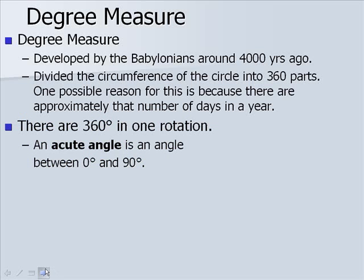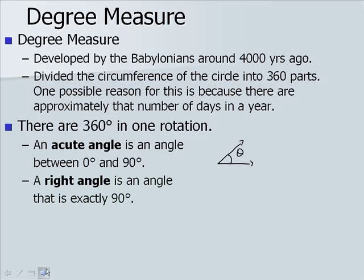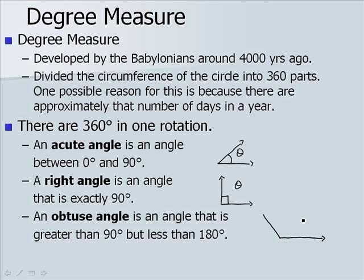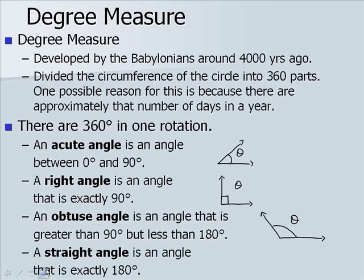An acute angle is an angle between 0 degrees and 90 degrees — our angle theta here would be an example of an acute angle. A right angle is exactly 90 degrees, often denoted with a box. An obtuse angle is greater than 90 degrees but less than 180 degrees. A straight angle is exactly 180 degrees.